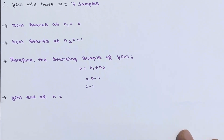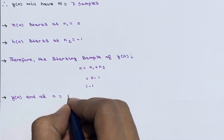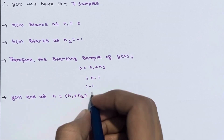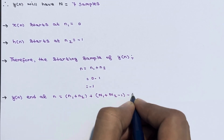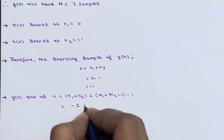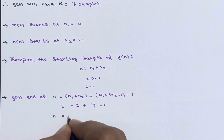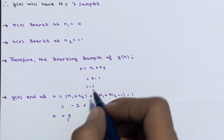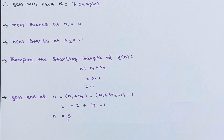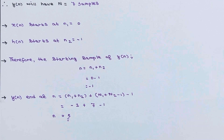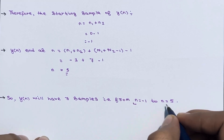For the ending point, using the formula n1+n2+N1+N2-1-1: it gives n = -1+7-1 = 5. Alternatively, since the starting point is -1 and there are seven samples, the end point is n=5. So y[n] has seven samples from n=-1 to n=5.